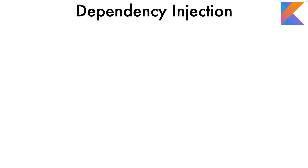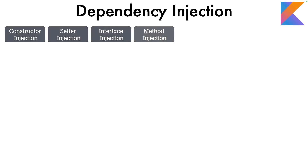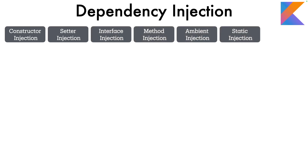The very common dependency injection is constructor dependency injection, or simply constructor injection. And then you have setter injection, interface injection, method injection, ambient injection, static injection, and last but not the least, field injection.